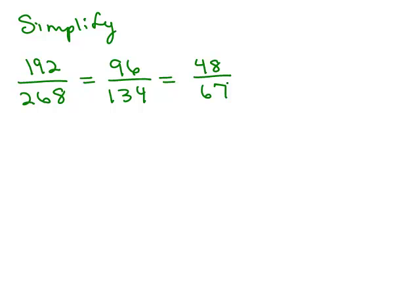At this point they're not both even, and in fact 67 is prime. So if one of the numbers is prime and it doesn't go into the other number or the other number doesn't go into it evenly, then you've got a reduced fraction. So this is now reduced.